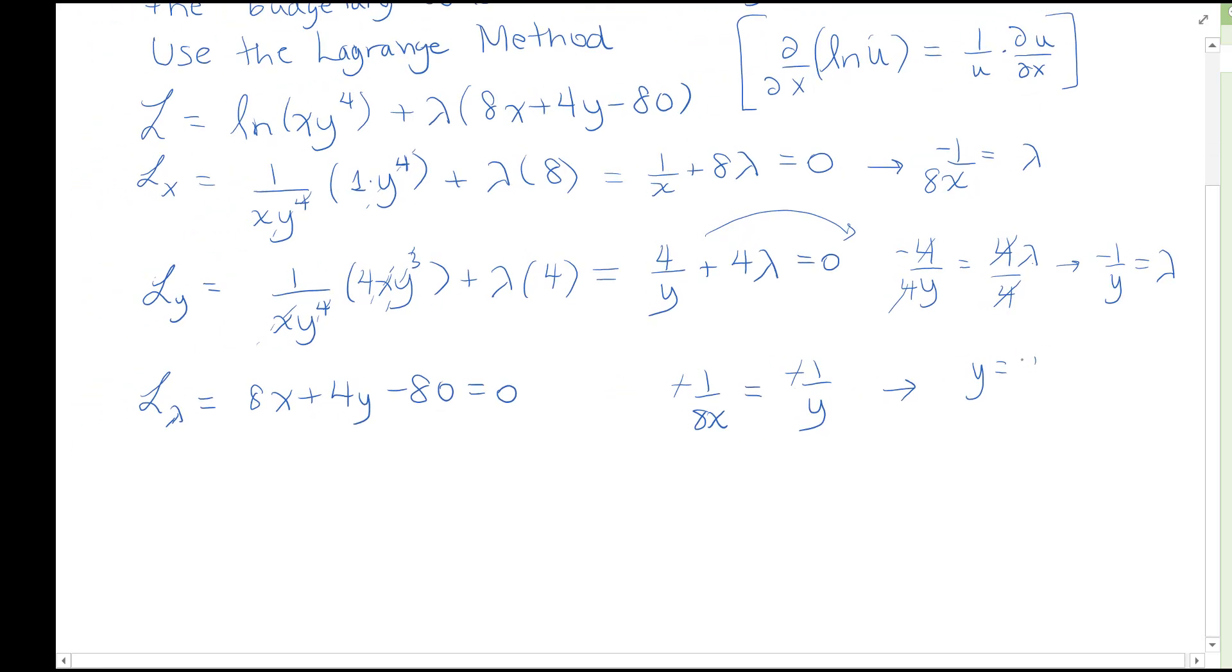And since that is true, then here we're going to put in an 8x instead of y and we get 8x plus 4 times 8x is equal to 80. And that gives us 8x plus 4 times 8 is 32. This gives us 40x equals 80. So x is going to just be 2. It's going to be 80 over 40, which is 2.